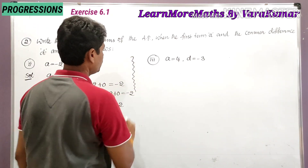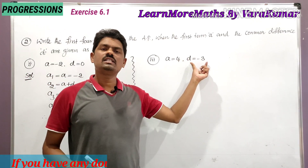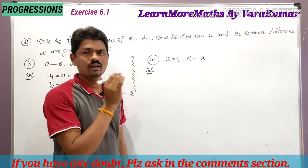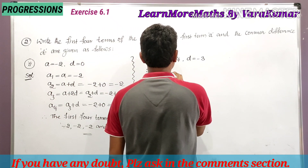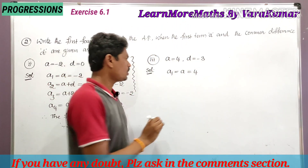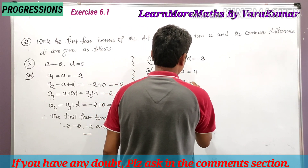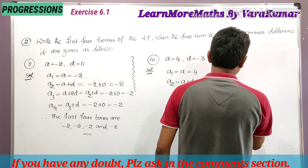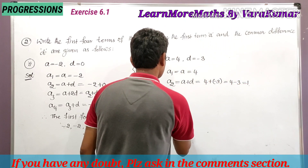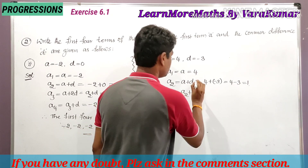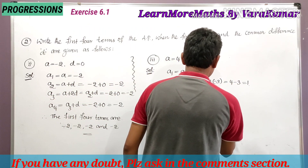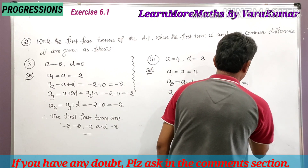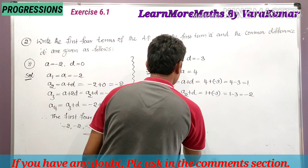In the third bit, a is equal to 4 and d is equal to minus 3. The first four terms are a1, a2, a3, and a4. The first term a1 is equal to a, which is 4. The second term a2 is equal to a plus d, so 4 plus minus 3, which is 4 minus 3, equal to 1. The third term a3 is equal to a2 plus d, so 1 plus minus 3, which is 1 minus 3, equal to minus 2.